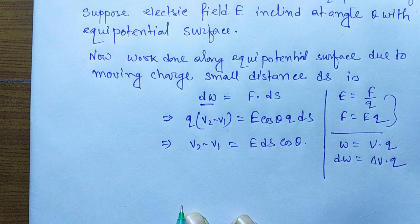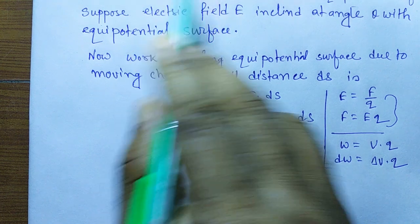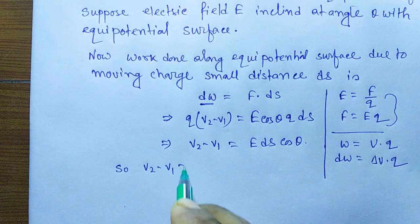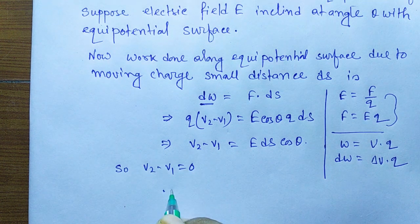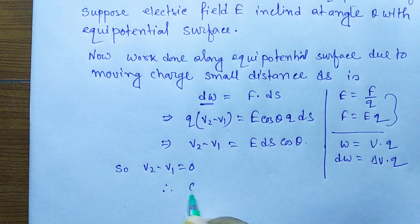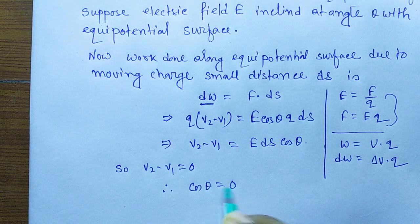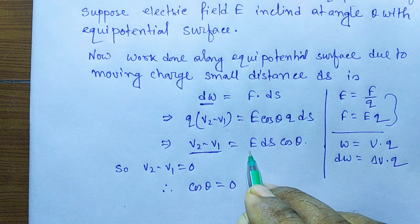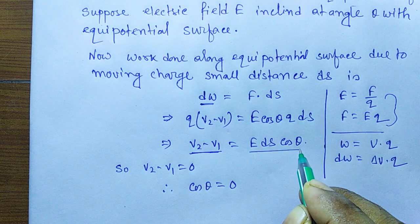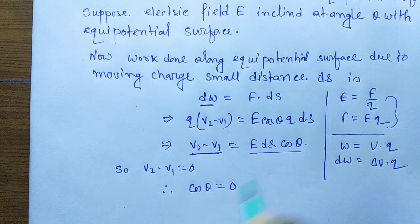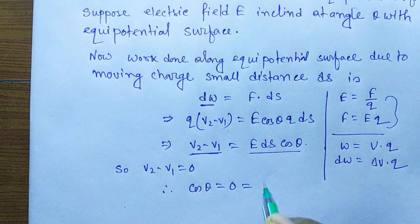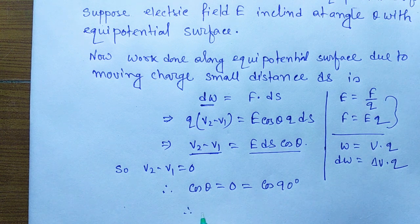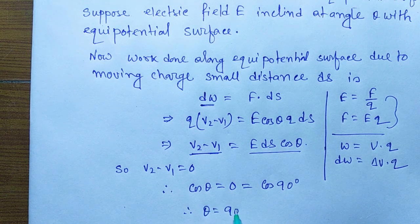Now, as the surface is equipotential, V₂ minus V₁ equals zero. Therefore, E ds cos theta equals zero. Since E and ds are not zero, cos theta equals zero, which equals cos 90 degrees. Therefore, theta equals 90 degrees.